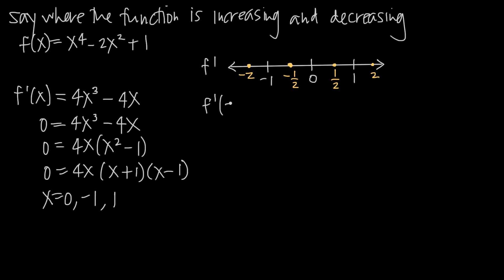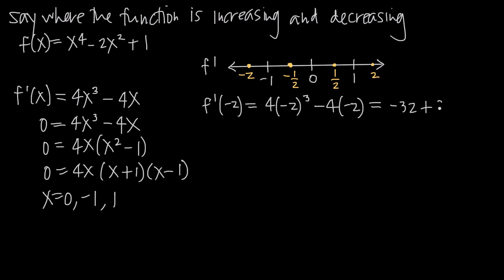For our first test point, f'(-2) = 4(-2)³ - 4(-2) = 4(-8) - (-8) = -32 + 8. When using the first derivative test, the actual value isn't important — what matters is whether it's positive or negative. Here, -32 + 8 gives a negative value.